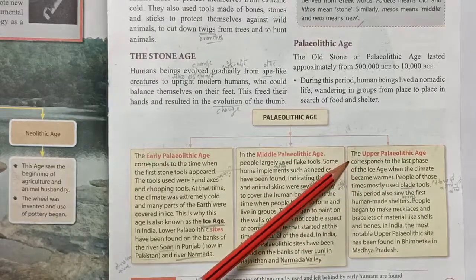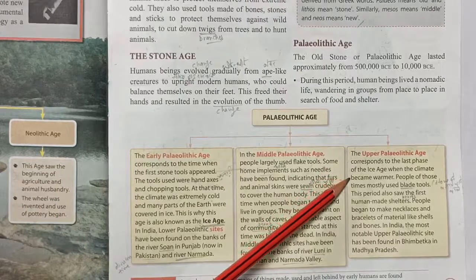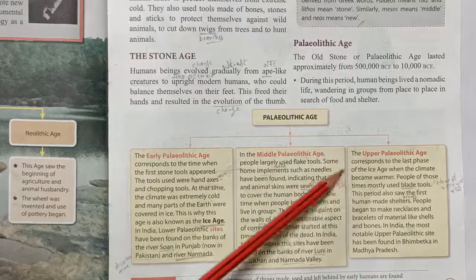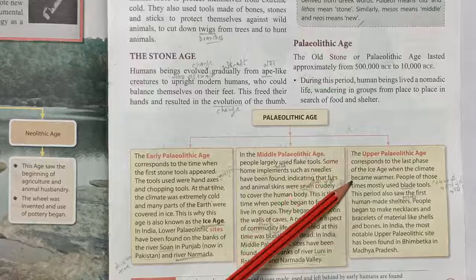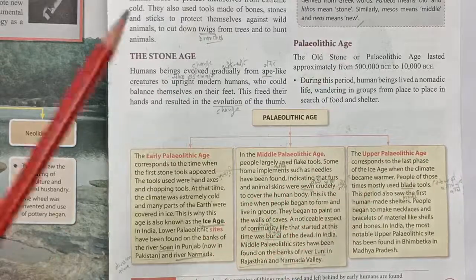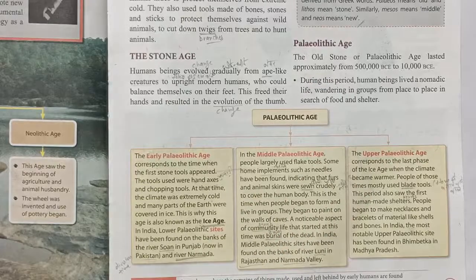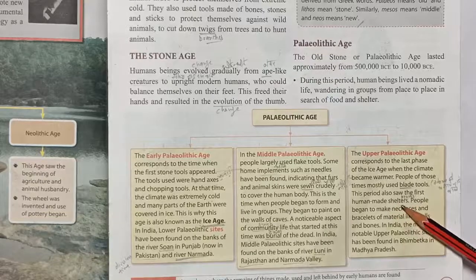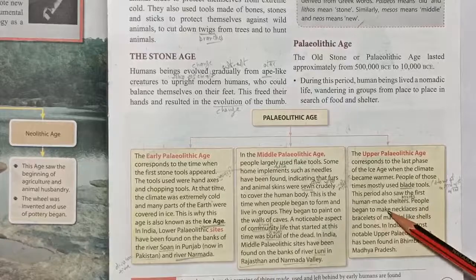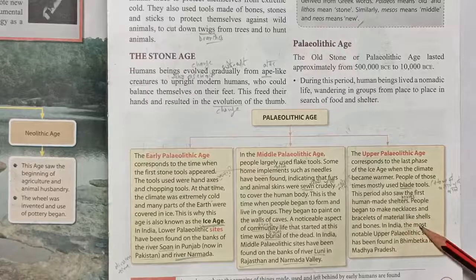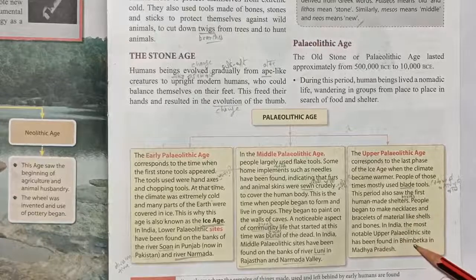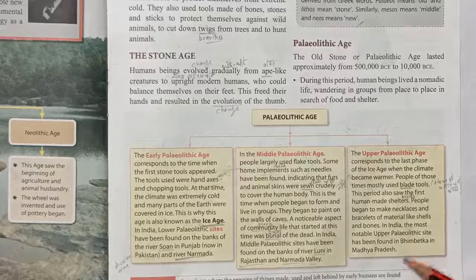The upper Paleolithic age corresponds to the last phase of the ice age when the climate became warmer. People of those times mostly used blade tools — stone blades. This period also saw the first human-made shelters. People began to make necklaces of material like shells and bones. In India, the most notable upper Paleolithic site has been found at Bhimbetka in Madhya Pradesh.